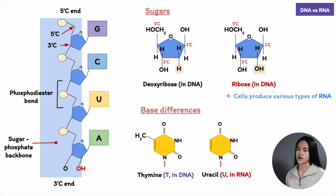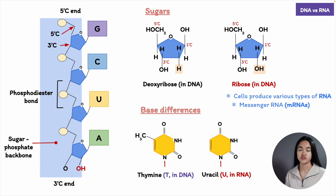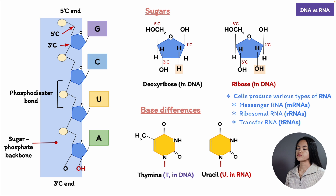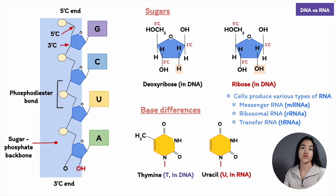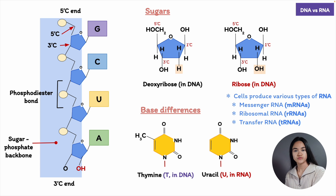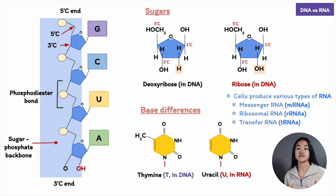Cells produce various types of RNA. The RNA molecules encoded by genes are called messenger RNAs, or mRNAs. In eukaryotes, each mRNA typically carries information transcribed from just one gene, which codes for a single protein. There are also final products of some genes that are the RNA itself — these non-coding RNAs have different structural, catalytic, or regulatory roles. When a final product of a gene is a protein, gene expression includes both transcription and translation. But when an RNA molecule is the final product, translation is not needed.